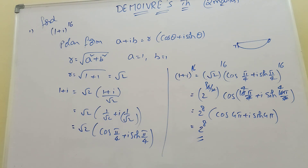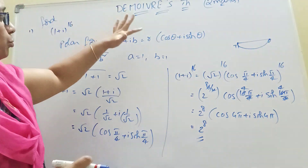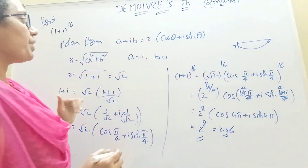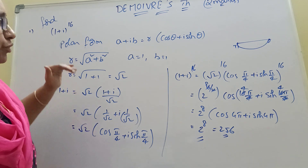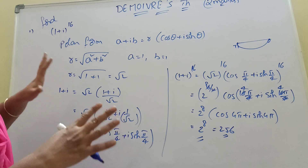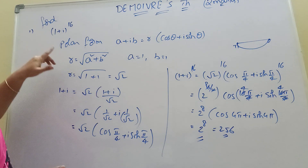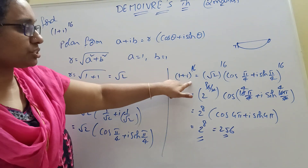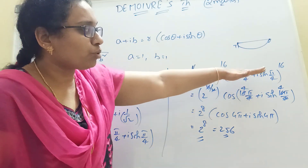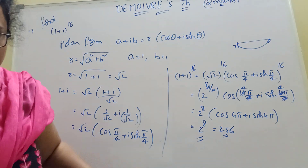2 to the power 8 is actually 256. So the value of (1 + i) to the power 16 is 256. Whatever number is there, first convert to the a + ib polar form. Since power 16 is there, we take r to the 16 and apply De Moivre's theorem to both parts. Then we easily get the value.